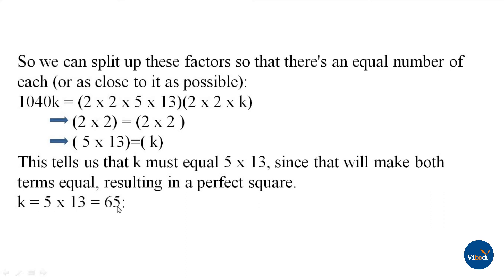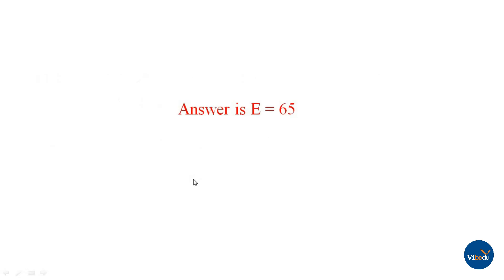So k = 65 makes 1040k a perfect square. In the options, answer E is correct: 65.